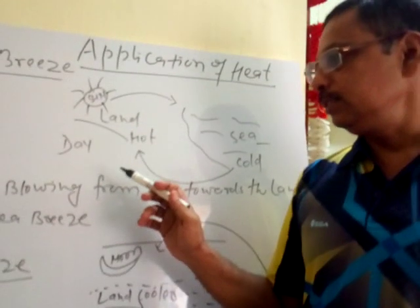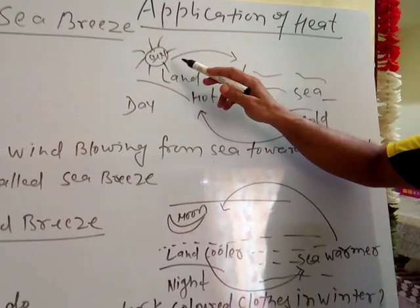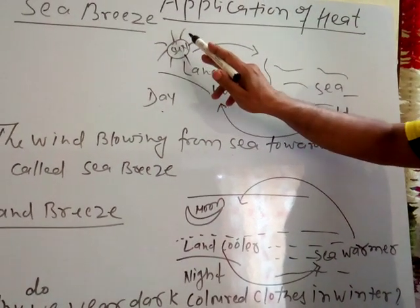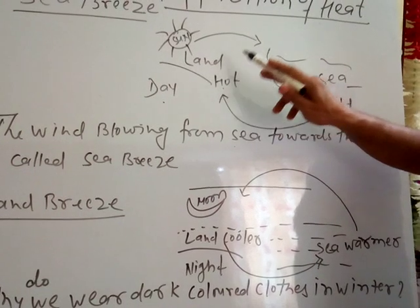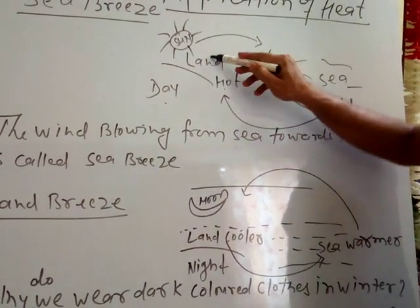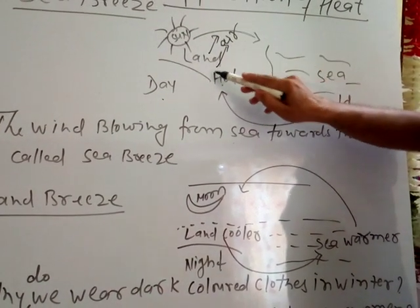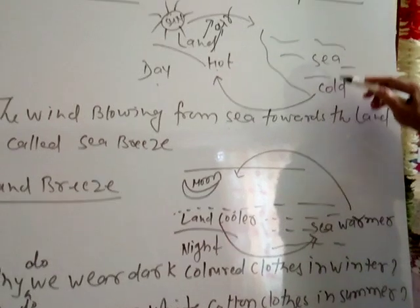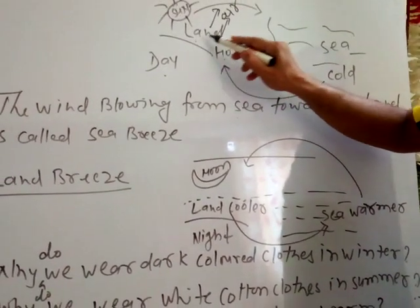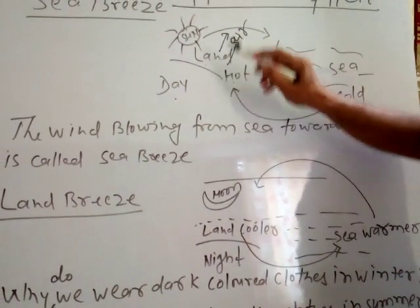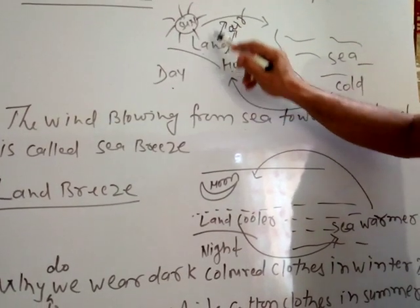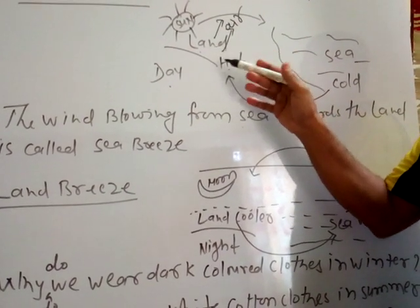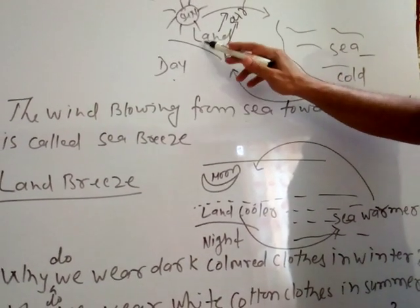Sea breeze generally takes place in coastal areas. During daytime, the Sun heats the land and it becomes very hot. When the land becomes hot, the air present on the land rises up. When the land's air rises up, the cold air from the sea takes the place of the hot air. The surrounding becomes warm and when air becomes hot, it rises up into the atmosphere.